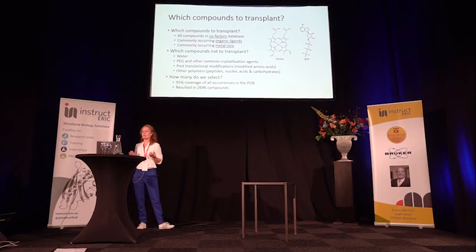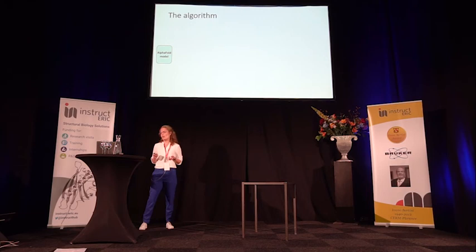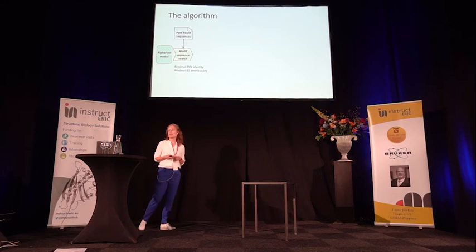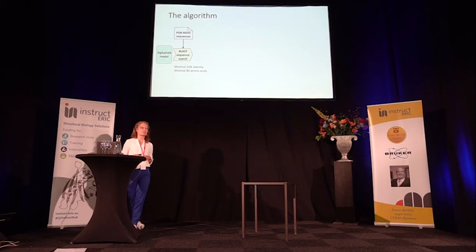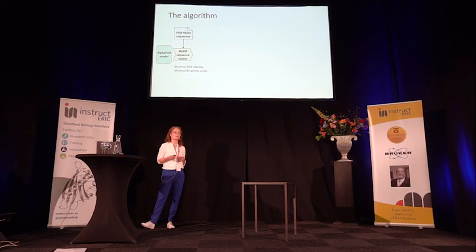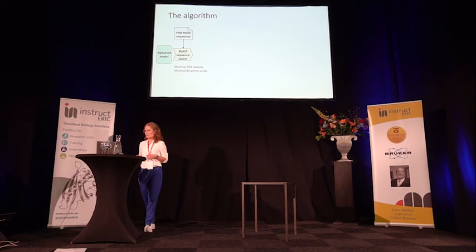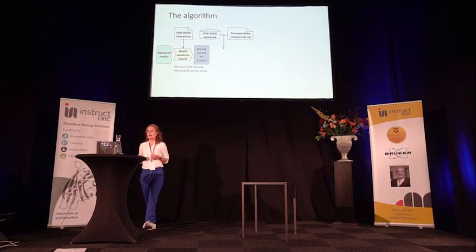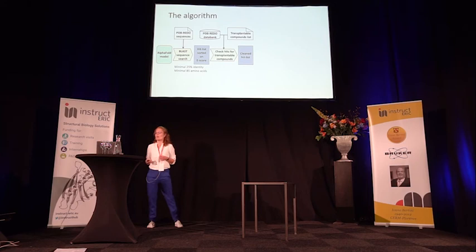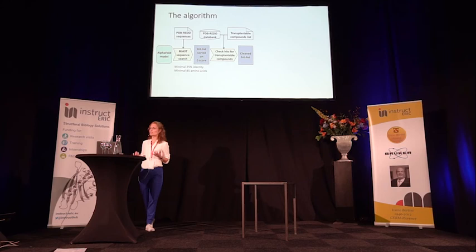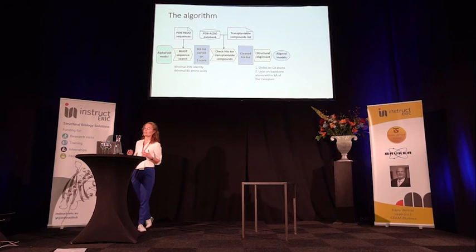Now knowing what we want to transplant, we worked on our algorithm. The algorithm starts from the AlphaFold model, and we take the PDB-REDO databank based on the sequences available. We do a BLAST sequence search, selecting all hits with a minimum identity of 25% over a length of 85 amino acids — thresholds known to be the minimum requirement to get a secondary structure alignment. We end up with a hit list sorted on BLAST score, and we check whether those hits contain structures with transplantable compounds.